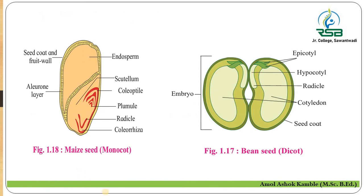In the monocot seed, for example maize, there is a single cotyledon, while the dicot seed such as bean has two cotyledons. The endosperm is the nutritive tissue. In the monocot seed the plumule is covered by the coleoptile and the radicle is covered by the coleorhiza. The endosperm provides nutrition to the developing embryo.